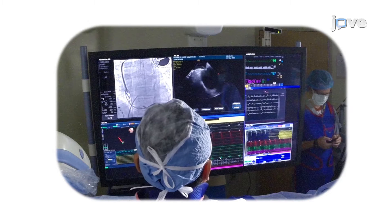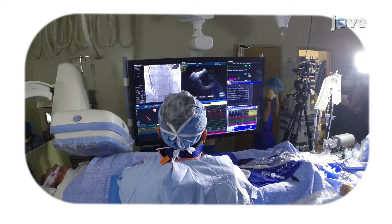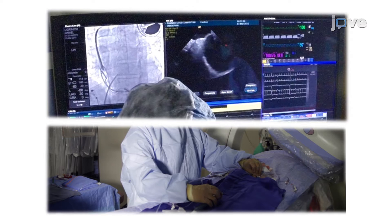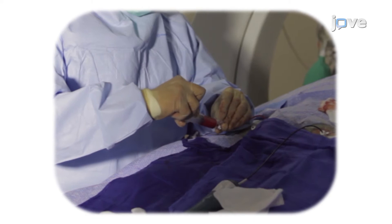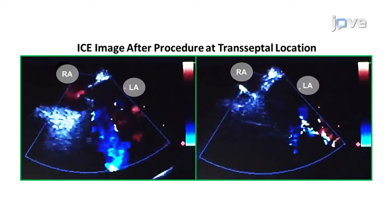Next, the location low and anterior to the FO is identified. Then, transeptal needle entry is performed. Finally, heparin is injected and activated clotting time is checked. Ultimately, fluoroscopy and intracardiac echocardiography, or ICE, are used to show the location of transeptal entry, and balloon occlusion is used as a measure of success.